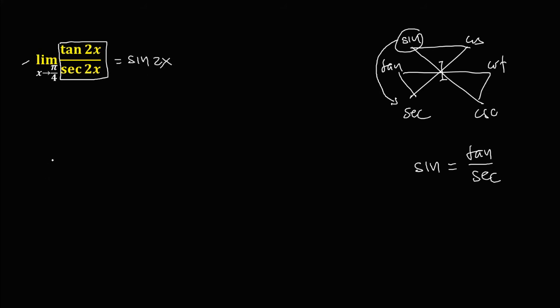So therefore, the new equation, we have the limit of sine 2x as x approaches to pi over 4. So to solve now for the limit,